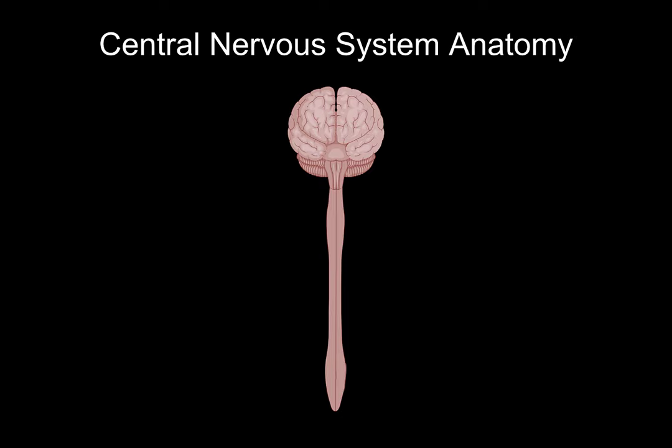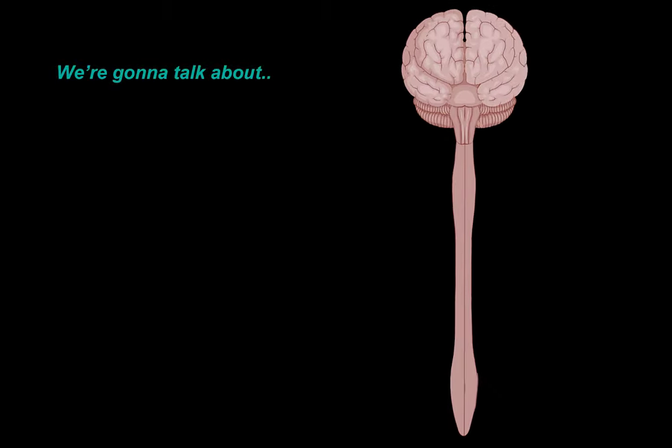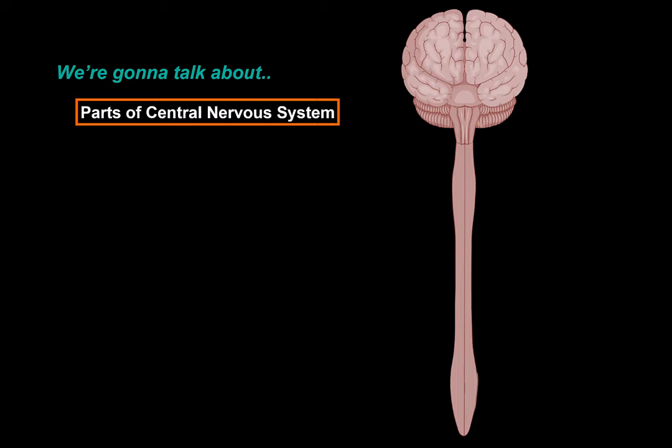What's up? Merite here. Let's talk about the anatomy of the central nervous system. In this segment, we will go through the basics in understanding how the anatomy of the central nervous system is built. We're first going to start by going through the parts of the central nervous system. Then we're going to go through the microscopic structures.